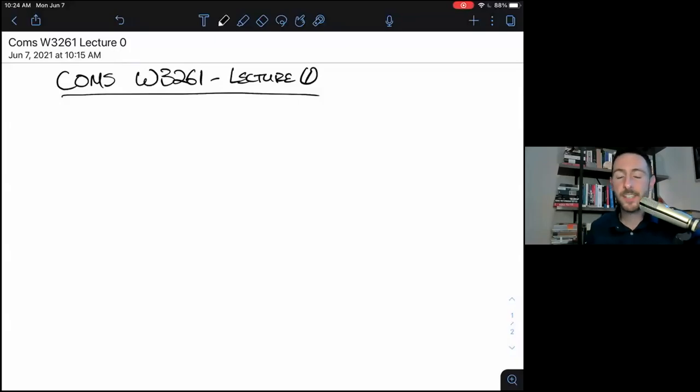Hi, and welcome to Computer Science Theory. I'm Tim Randolph, and this is COMS W3261 at Columbia University, Summer B 2021. This is lecture zero.